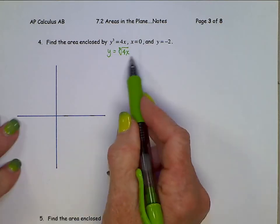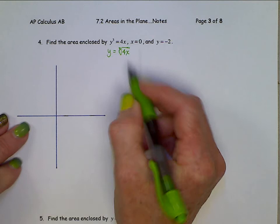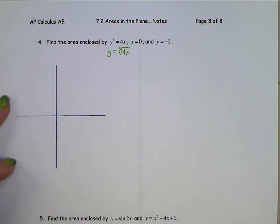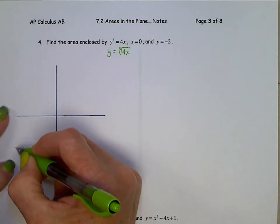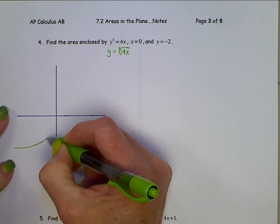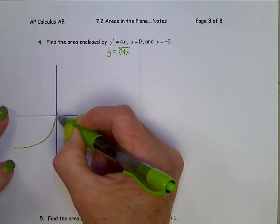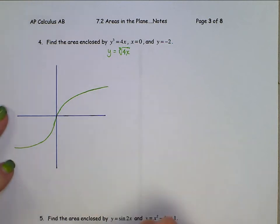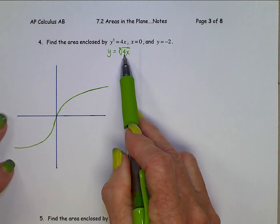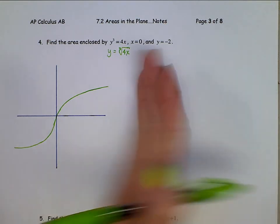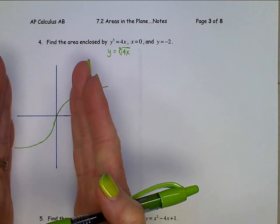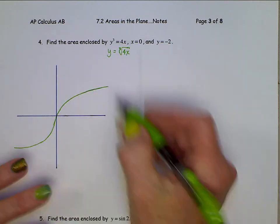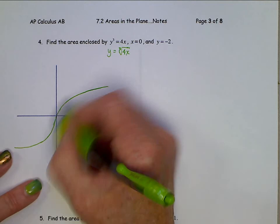The cube root of 4x is a variation on the cube root of x, and the cube root of x looks something like that. All this 4 is going to do is a horizontal compression, which scooches it closer together. But since we're not putting a scale on here, that 4 doesn't matter when we sketch this graph.